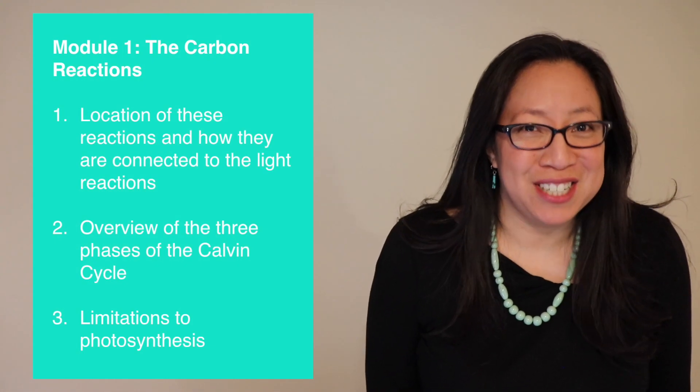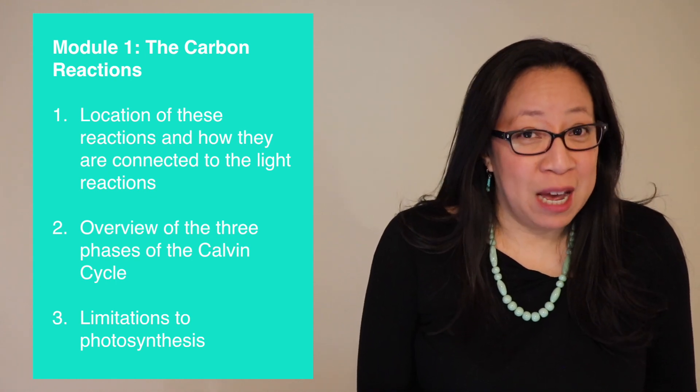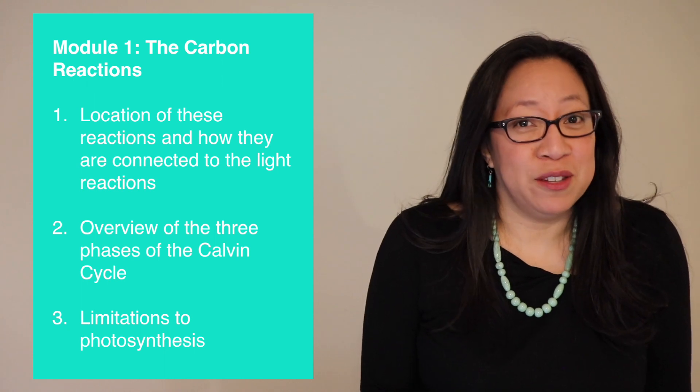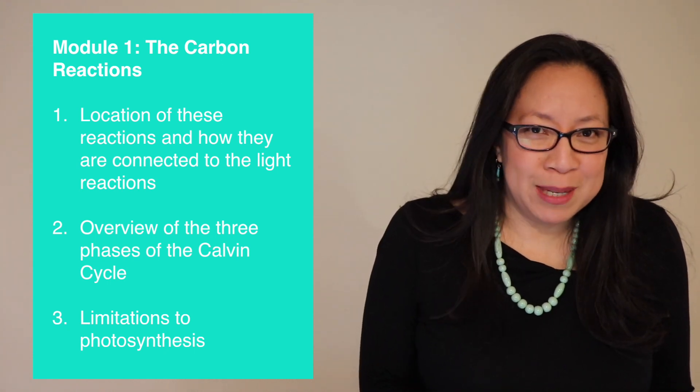Hey everyone! Today for module one we'll be talking about the carbon reactions. We'll start with where they are located and what happens and how they're connected to the light reactions. Then we'll talk about the three phases of the Calvin cycle and then we'll finish off with what limits photosynthesis.